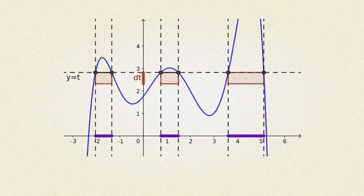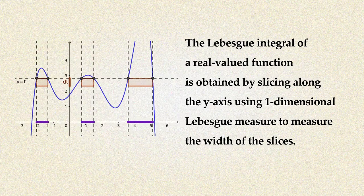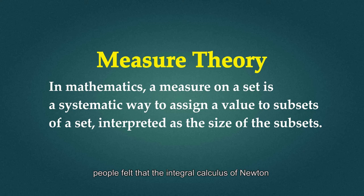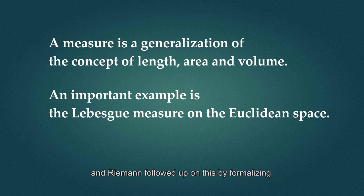The Lebesgue integral of a real valued function is obtained by slicing along the y-axis using one-dimensional Lebesgue measure to measure the width of the slices. However, unlike Archimedes method, which was based on Euclidean geometry, people felt that the integral calculus of Newton and Leibniz did not have a solid foundation. In the 19th century, Cauchy developed epsilon-delta limits and Riemann followed up on this by formalizing what is now called the Riemann integral.